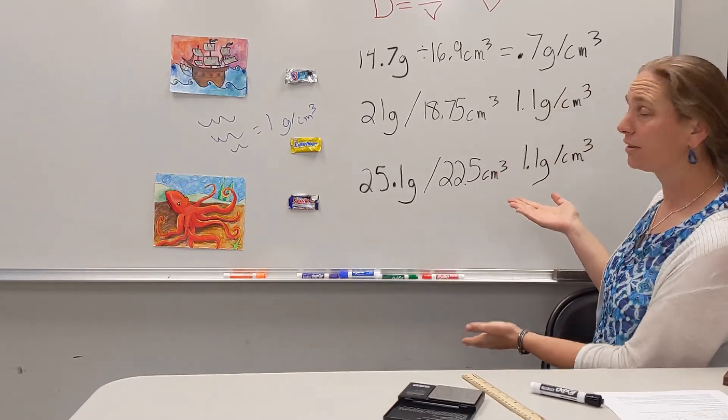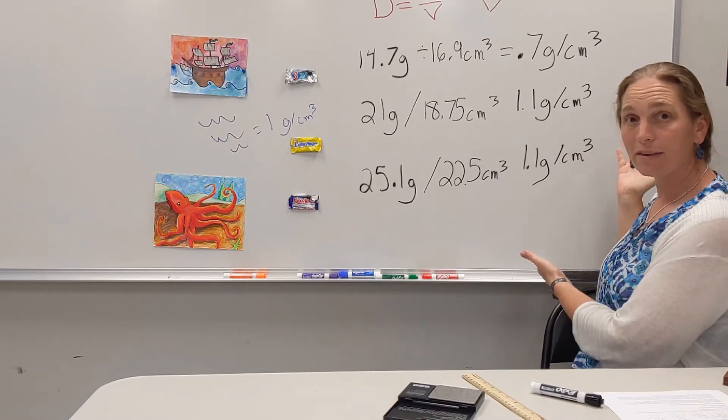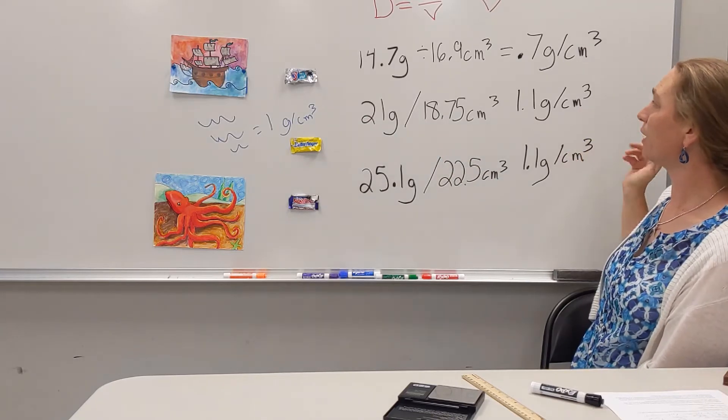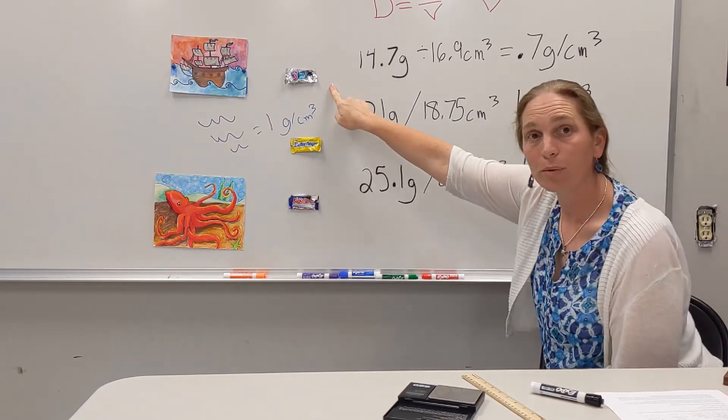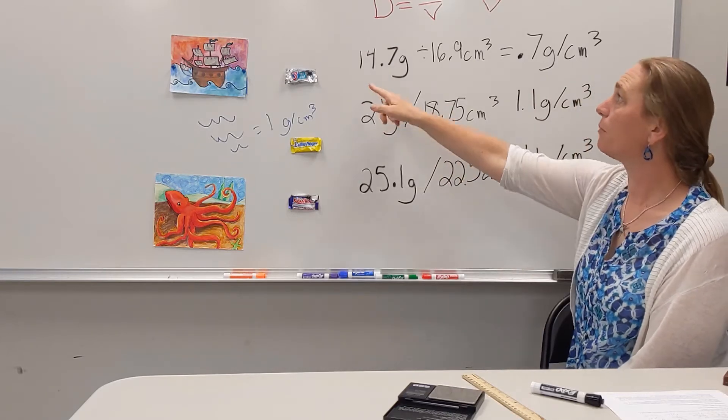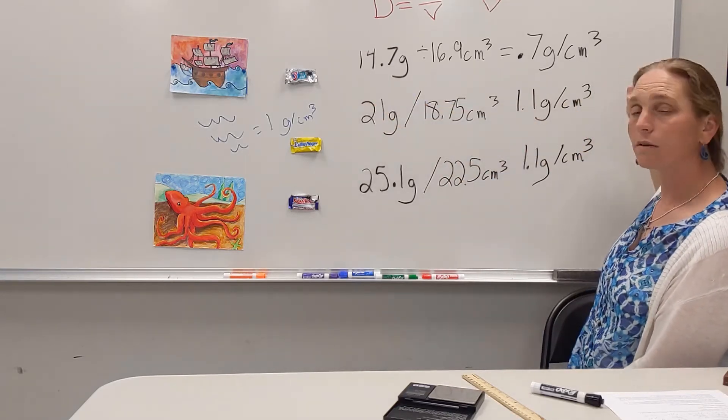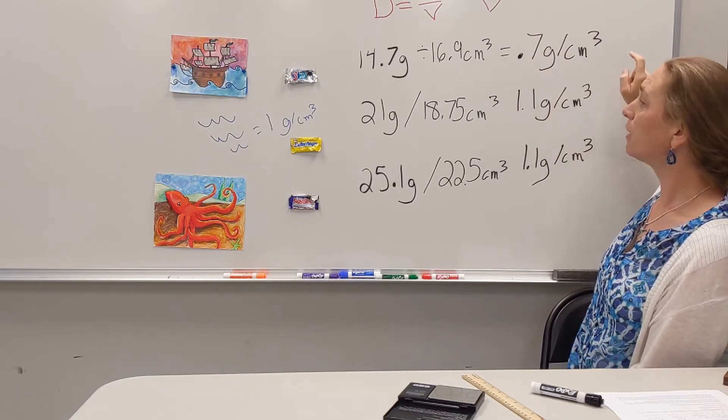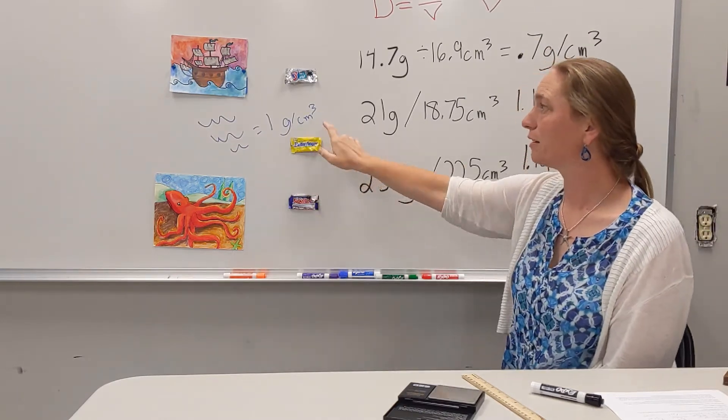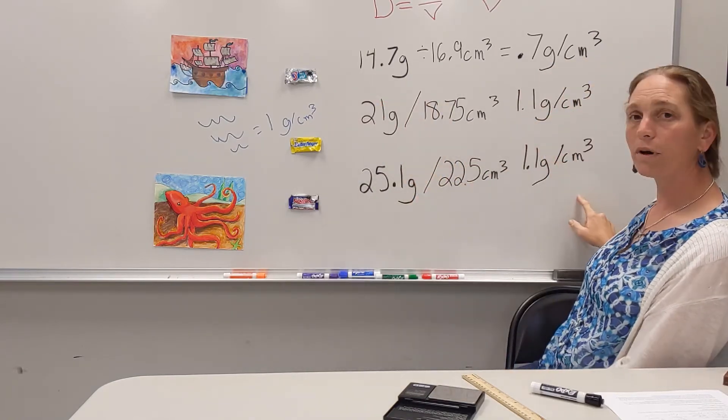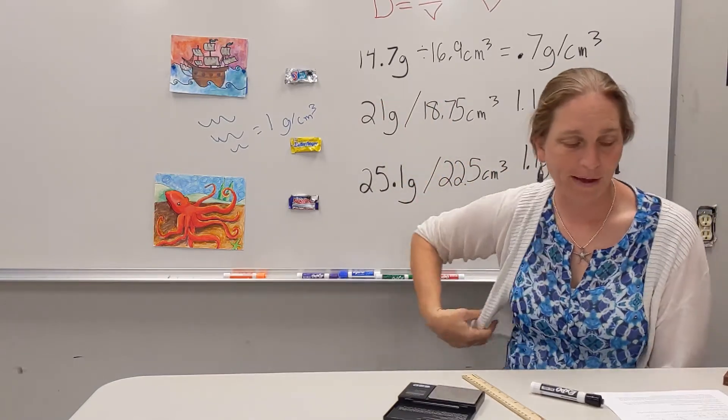So are any of our candy bars less dense than water? How do I know? Are any of these numbers less than 1? That's how I know, because the units match up. So is it less than 1? Our Three Musketeers is less than 1. So we should say that my Three Musketeers will float in water. I know how dense it is. It is less dense than water, so it should float. More dense, they should sink. That's what you'd expect to happen.